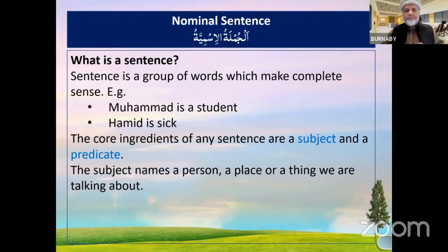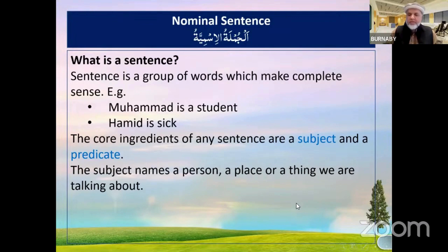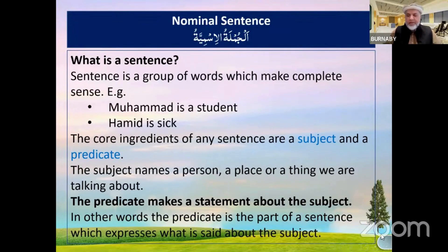For example, Muhammad is the subject — he is the person we are talking about — and the khabar tells you he is a student. In the second sentence, Hamid is another subject and we are telling you he is sick. So the predicate gives more detail about the subject, and the predicate makes a statement about the subject.